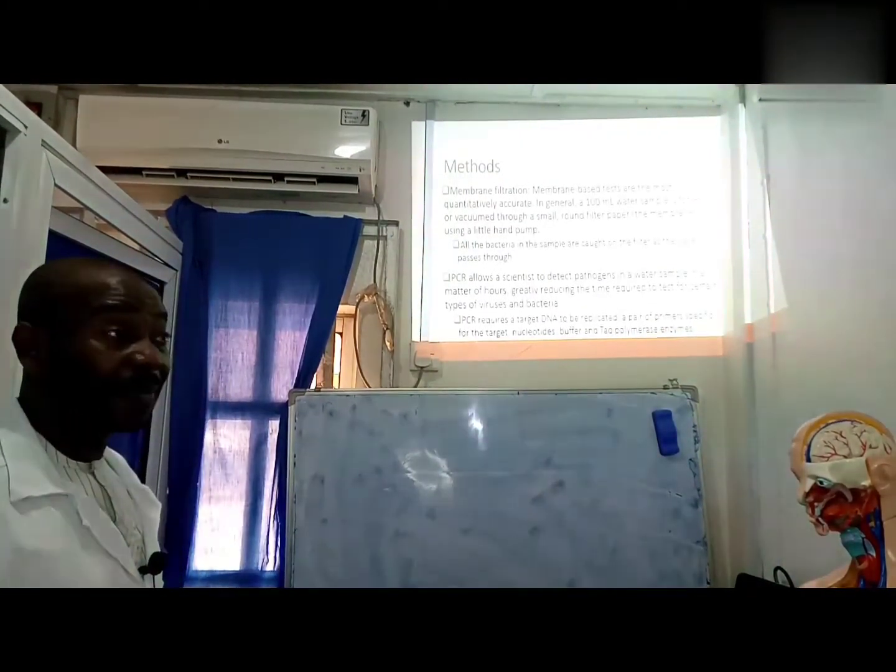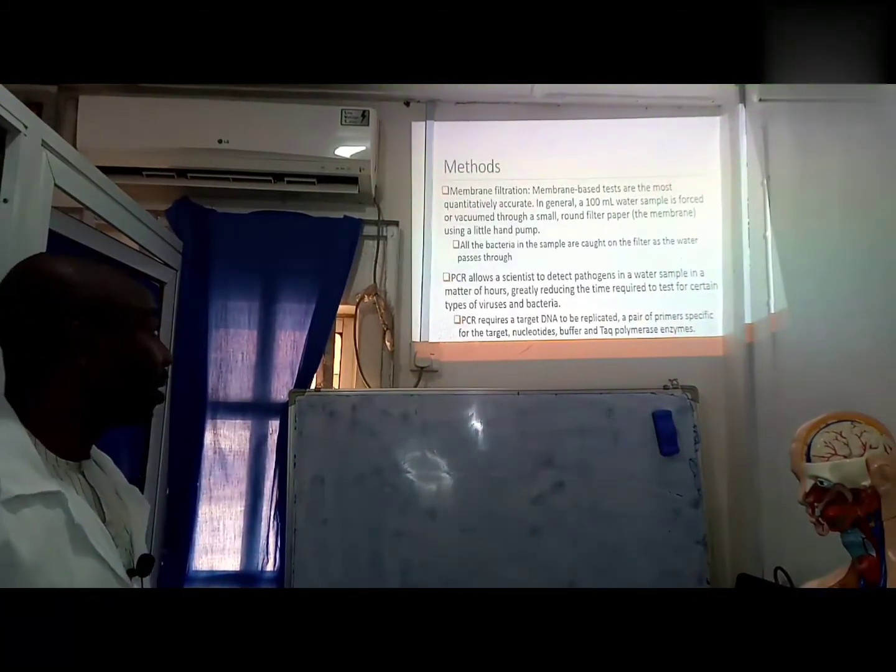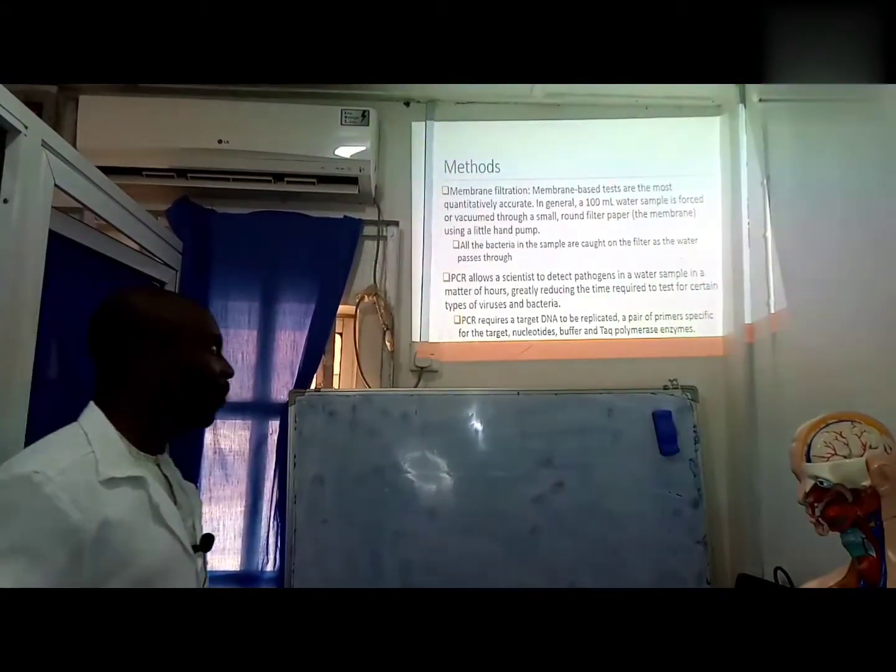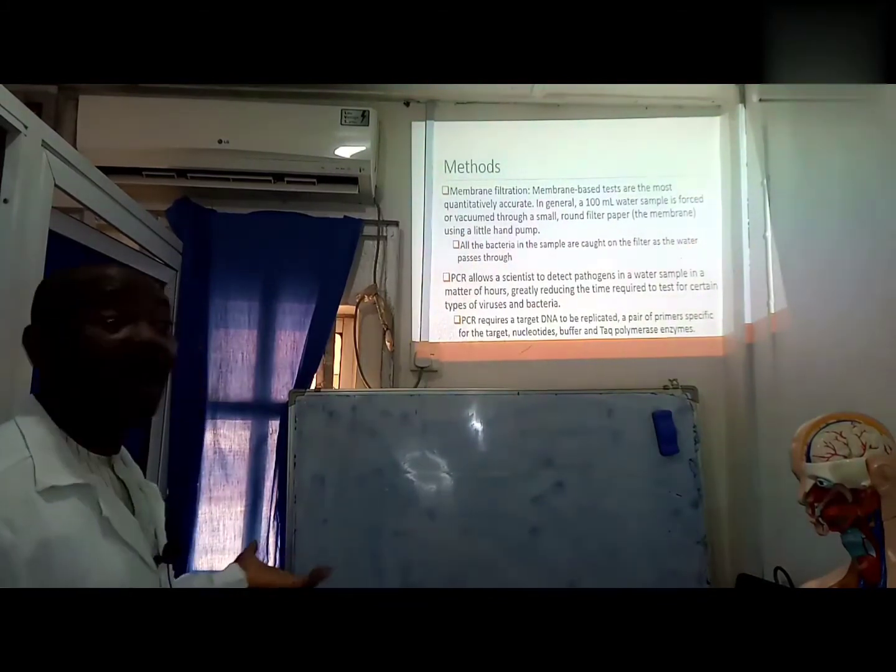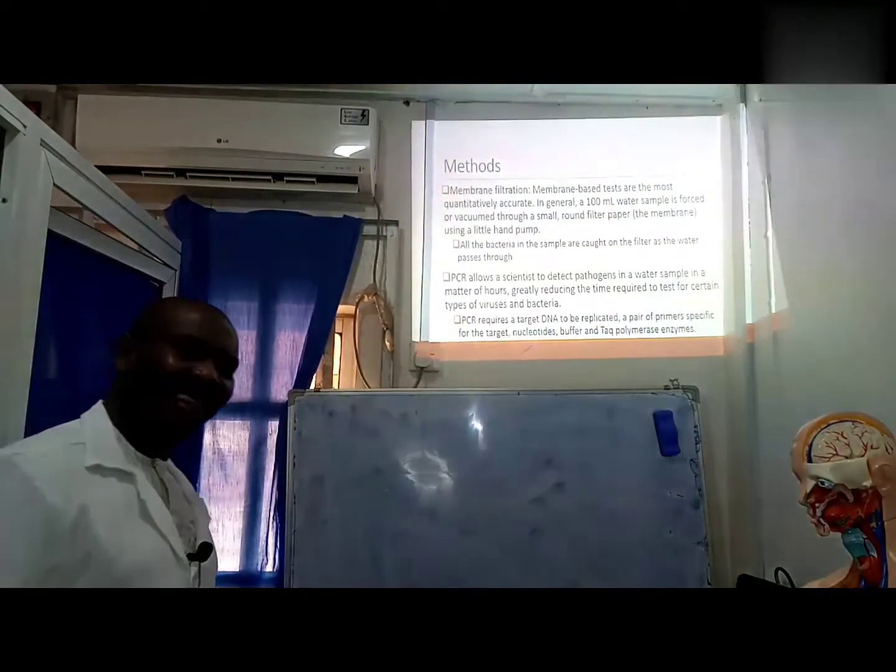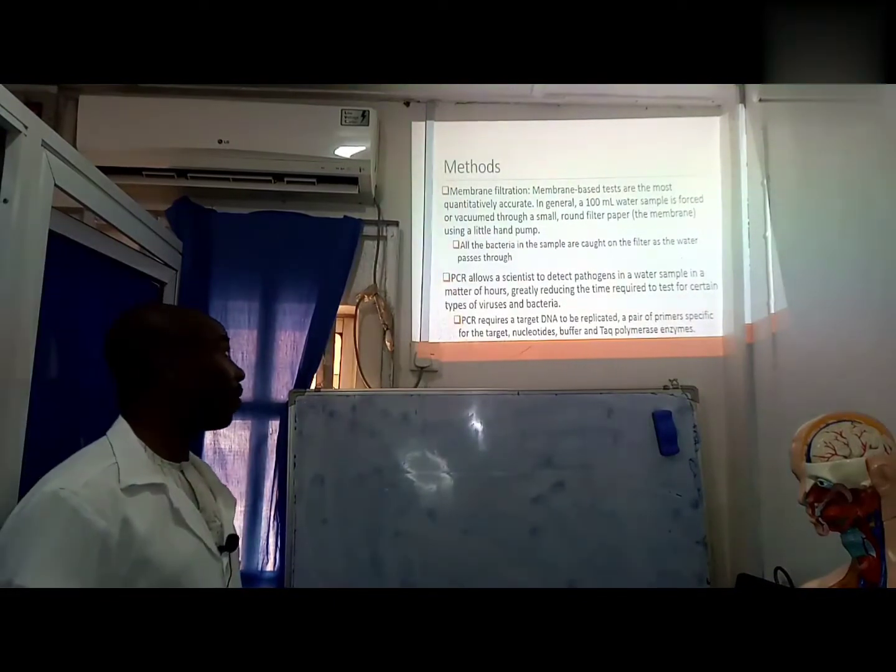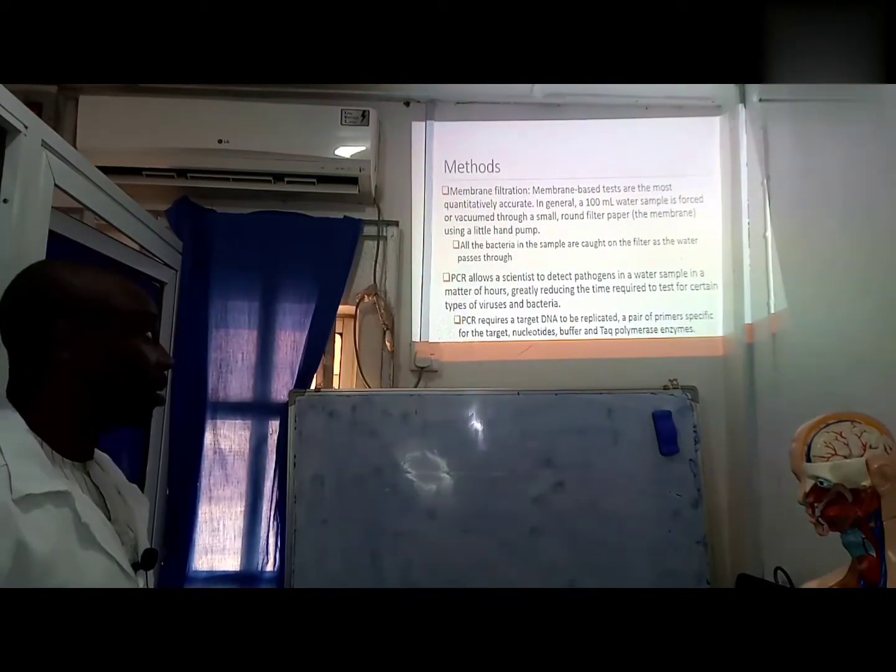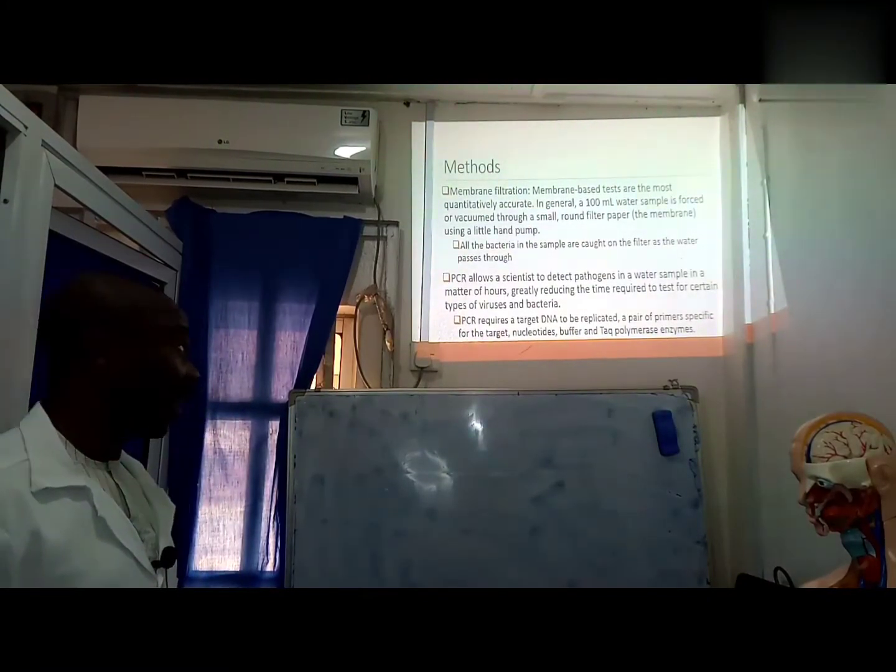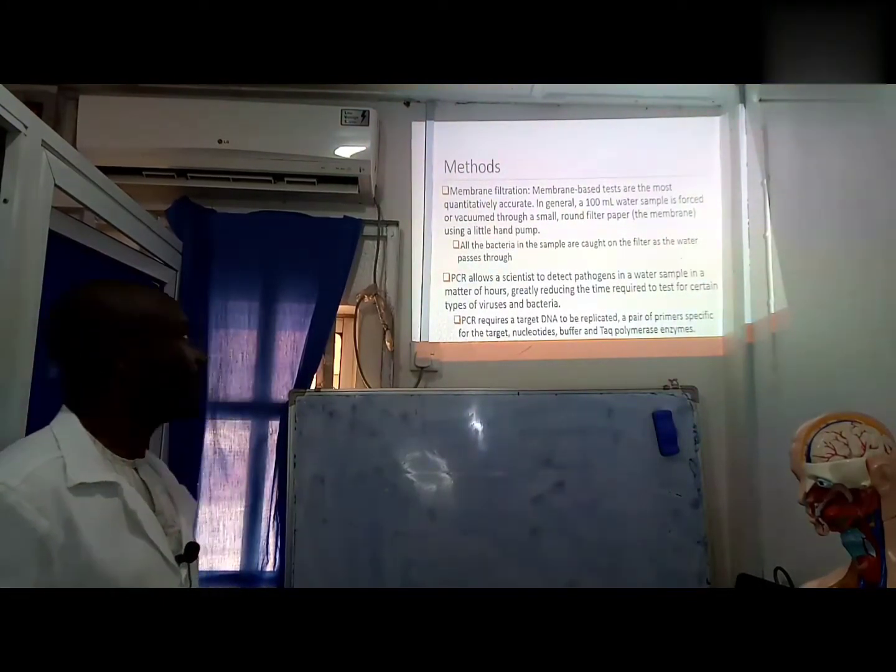PCR is also used, which we don't have all around, to detect pathogens in a water sample in a matter of hours. Within hours we can tell the kind of organisms that we have in the water supply using the technology of PCR. PCR requires target DNA to be replicated, a pair of primers specific to target compounds, and Taq polymerase enzymes are needed for us to use PCR.